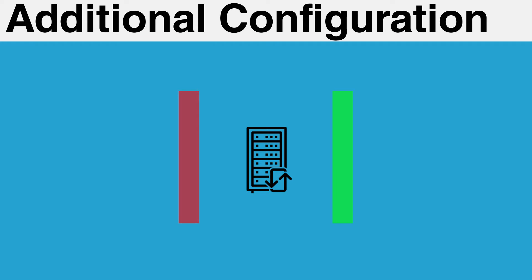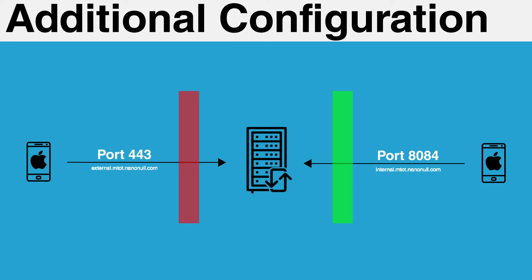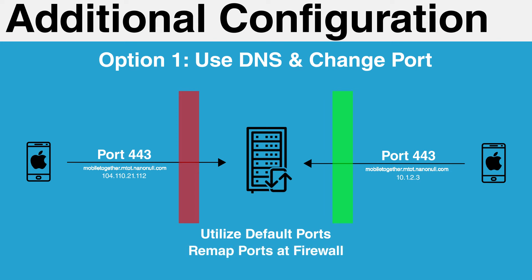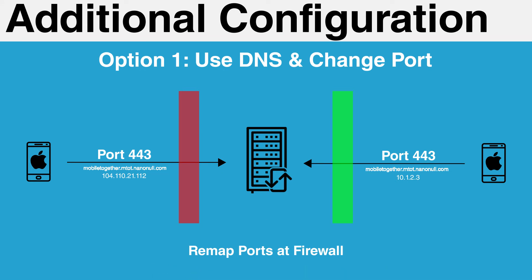At this point, you may realize that we have run into a problem. Clients configured to access your MobileTogether server from the outside may be unable to connect internally, since we are anticipating they will need to use an internal address and port when connecting. We suggest choosing from one of two methods to solve this problem. The first method involves using DNS and changing ports. Set up your internal DNS server to resolve your MobileTogether server to an internal IP address, allowing clients inside your firewall to connect without leaving your network while serving external users the external-facing IP address. You will also need to map port numbers internally the same way you did externally — you can utilize the default ports to map them directly, remap the ports at the firewall, or change the port numbers MobileTogether server is listening on. I recommend remapping the port numbers at the firewall.